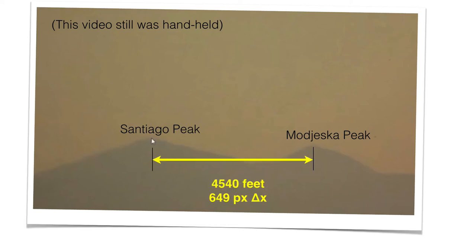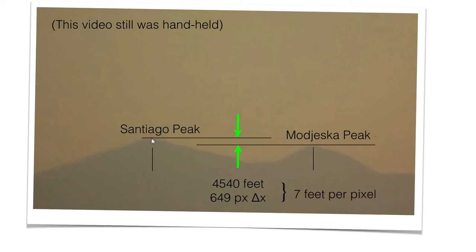So let's do the pixel math. First, we'll do the Delta X, how many pixels apart. It's about 649 pixels. Well, in the real world, that's 4,500 feet. So that's about seven feet per pixel.